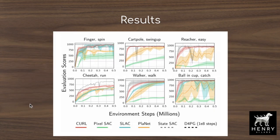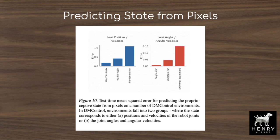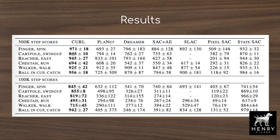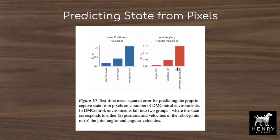A plot shows the number of environment steps to achieve a certain performance level. One way to understand the gap between pixel-based and state-based control is to predict physical state directly from pixels and plot prediction error. The cheetah run model, which has relatively poor performance compared to ball-in-cup or cartpole swing-up, also shows higher physical state prediction error, indicating some tasks still aren't quite ready for pixel-only control.